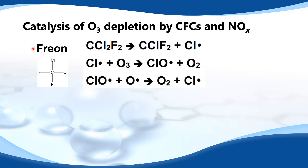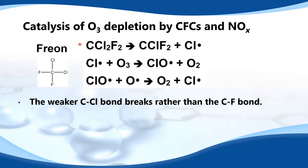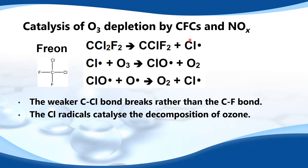For example, Freon (CCl₂F₂) undergoes photochemical decomposition. In the first step, the weaker carbon-to-chlorine bond breaks rather than the carbon-to-fluorine bond, producing chlorine radicals. These chlorine radicals then catalyze the decomposition of ozone.